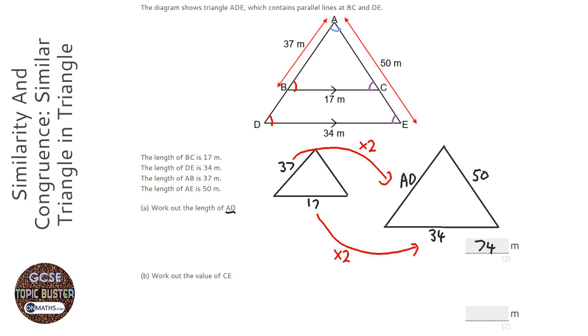And the last one, let's do it in a different color. Now we're looking for length CE. So CE is a bit of a weird one, isn't it? Because CE is this bit here. So all I need to do is work out what AC is, which is this one here. So let's work out what AC is.